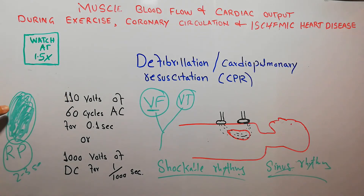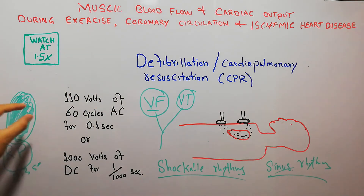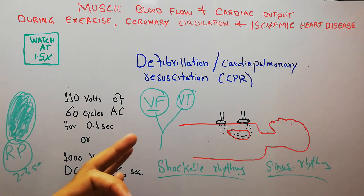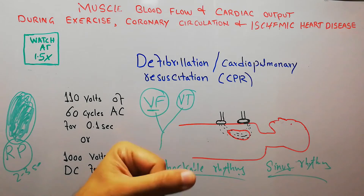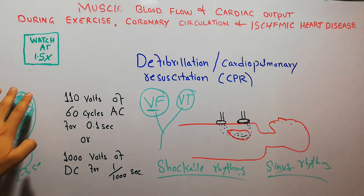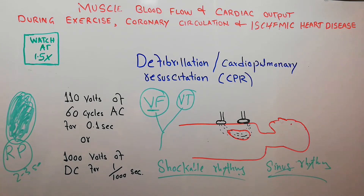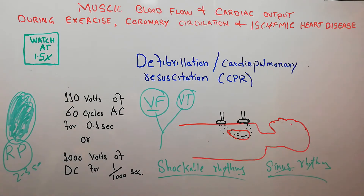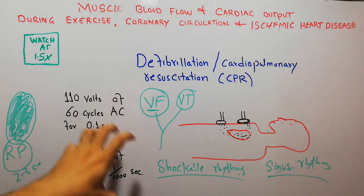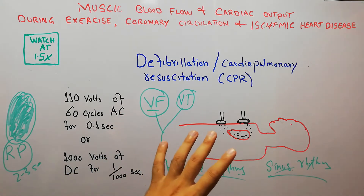Defibrillation puts the whole heart into the refractory period. In ventricular fibrillation there are small pockets of refractory areas mixed with non-refractory areas, so impulses pass chaotically and there is no proper pumping. The defibrillation process puts the whole heart into the refractory state so current cannot pass for 2 to 3 seconds. After that, the heart starts beating with sinus rhythm and the person can come out of ventricular fibrillation and live a normal life.